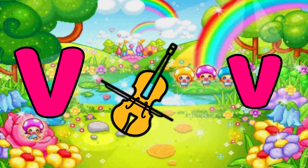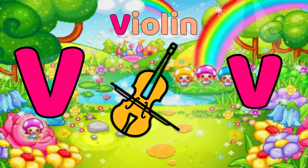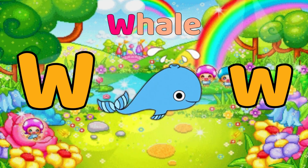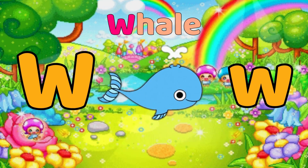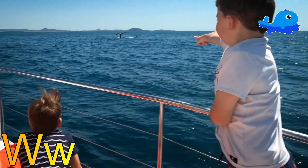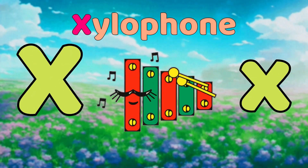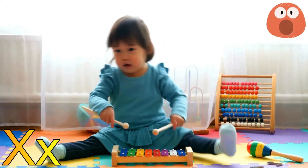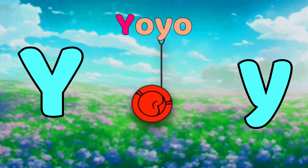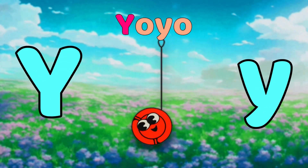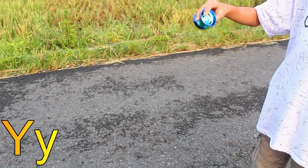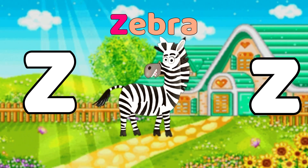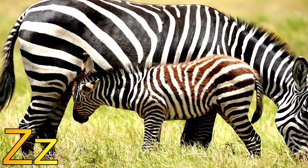V is for Violin. V-v-violin, V-v-violin. W is for Whale. W-w-whale, W-w-whale. X is for Xylophone. Z-z-xylophone. Y is for Yo-yo. Y-y-yo-yo, Y-y-yo-yo. Z is for Zebra. Z-z-zebra, Z-z-zebra, Z-z-zebra.